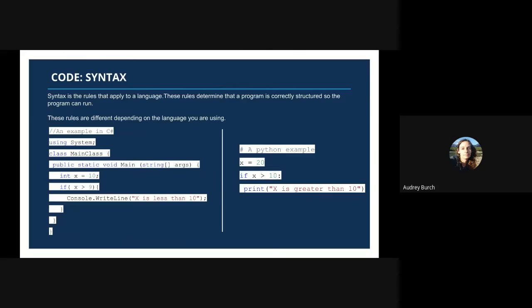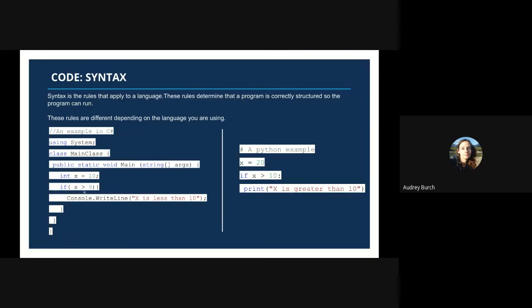It is only going to be run once to set up a variable called x and store a data value of 10 in it. Looking at the if statement: 'if (x > 9) { Console.WriteLine("x is greater than 10"); }' — that is an if statement comparing the variable x to a set number. Whenever x is greater than 9, which it is since x is 10, then it will print to the console that x is greater than 10 as a string. Text and string are the same — text is a string data type.